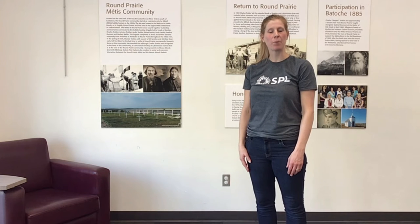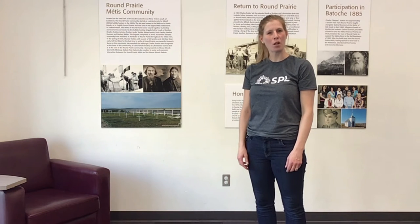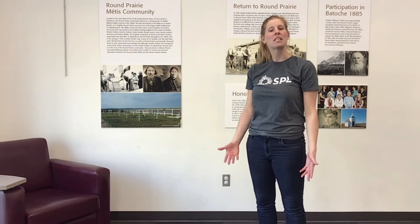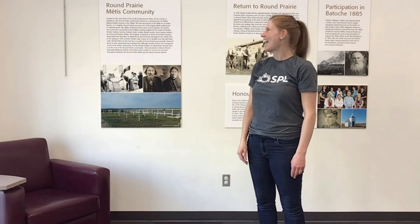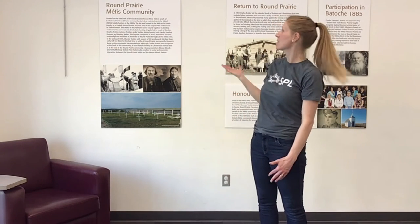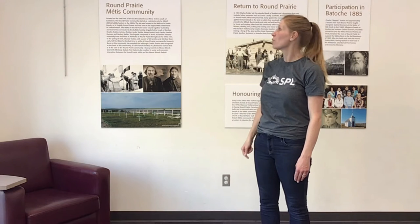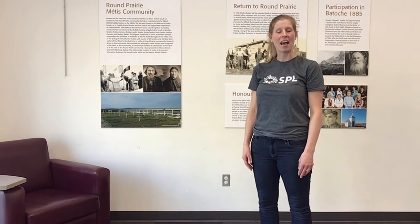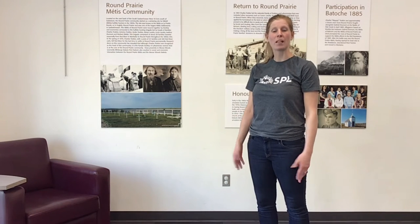I'm here in the Round Prairie Branch Library located in Stonebridge. Being in the meeting room gives me a special opportunity to acknowledge that we're on Treaty 6 territory, and also acknowledge the namesake of this branch library. Round Prairie was named after a Métis community located on the east bank of the South Saskatchewan River, 40 kilometers south of Saskatoon. The Round Prairie community started as a wintering site for Michif Métis buffalo hunters in the 1850s, and so this library is named Round Prairie after that Métis community.